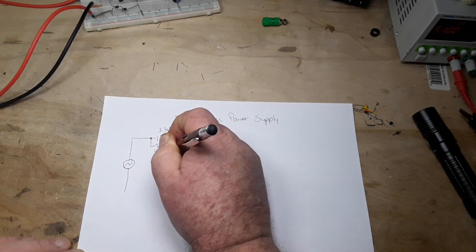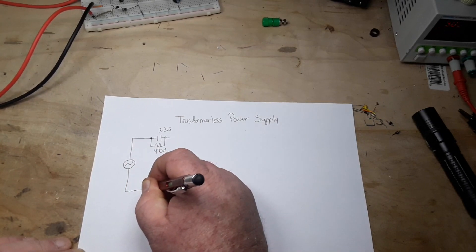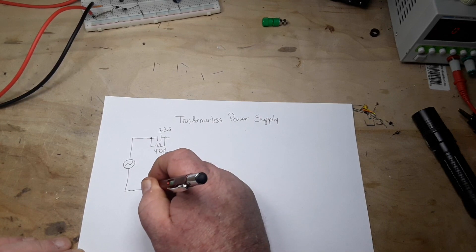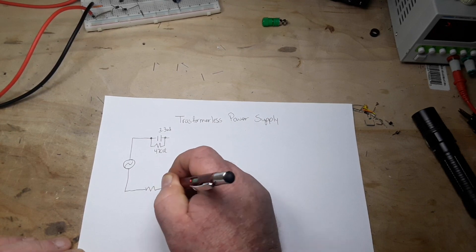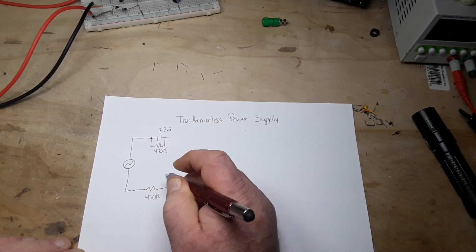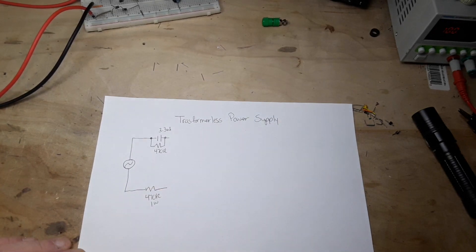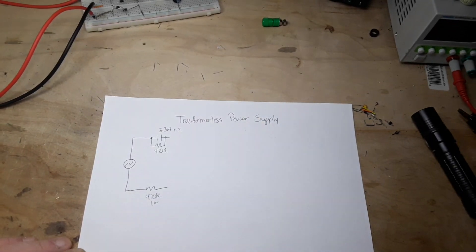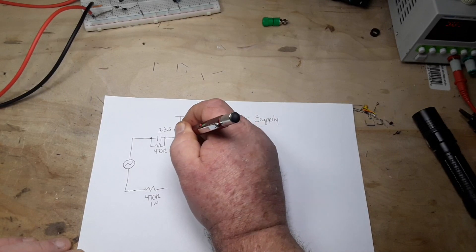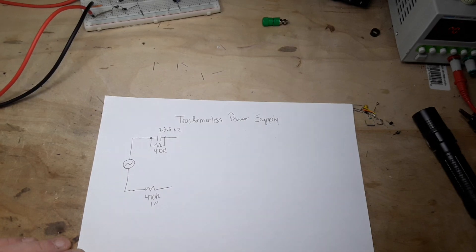We're going to parallel a 470 ohm resistor across it. We're also going to want a 470 ohm resistor here. These should be about a watt, and that should be X2. That's going to drop our voltage. Now we need to make a bridge rectifier.